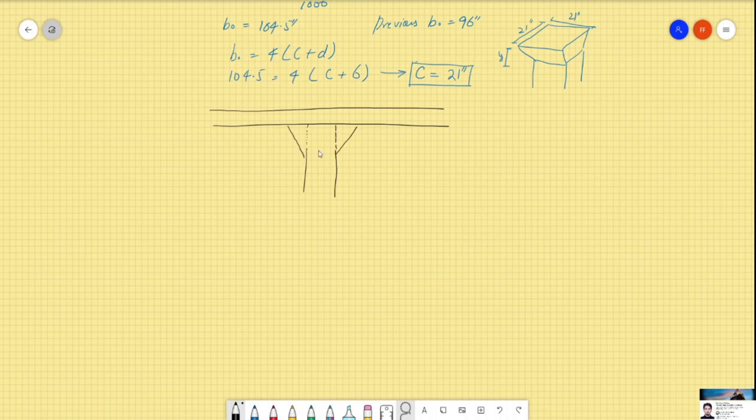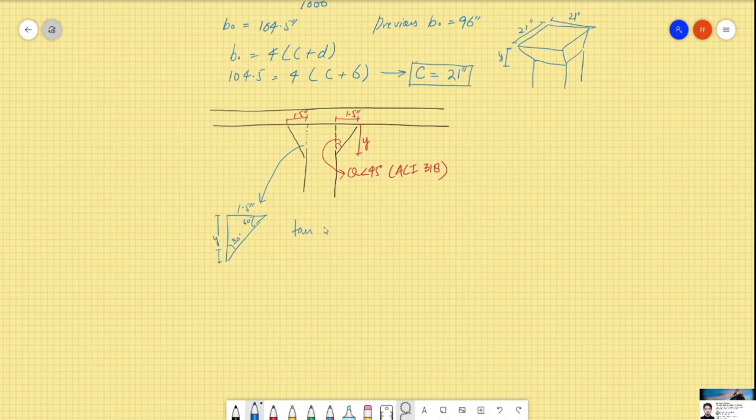And this is the column capital, we know now this is 1.5 inches and this is 1.5 inches. So we need to calculate y, and this angle should not be greater than 45 degrees according to ACI 318. Now by calculating, this is 1.5 inches, and if we assume that the angle is 30 degrees, we can calculate 1.5 divided by y, and y comes out to be almost 2.59 inches or 2.6 inches.